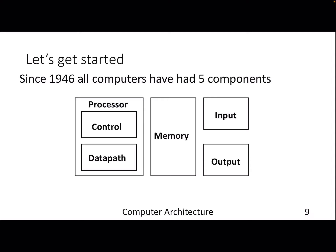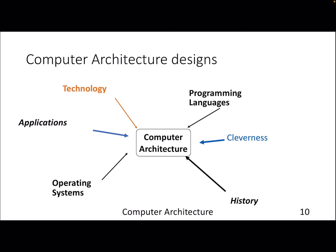Since 1946, all computers have had five components. There are four main boxes: a processor that processes your program — it has a control unit and a datapath — then there is memory, and then there is I/O. The I/O in today's world can be your touchscreen. We will see how all of these components interact with each other.